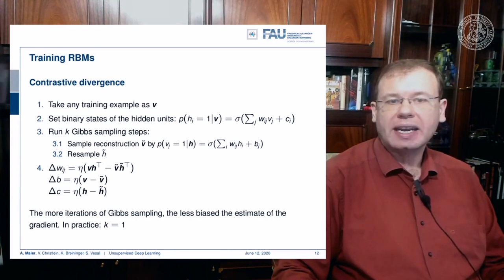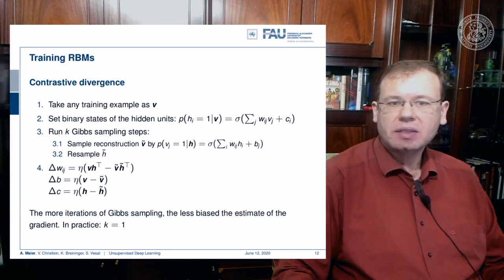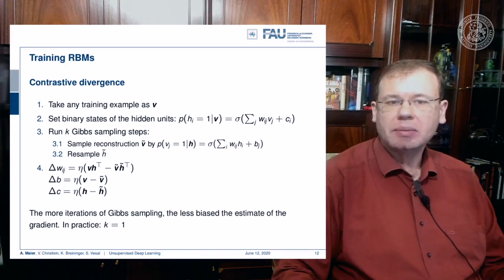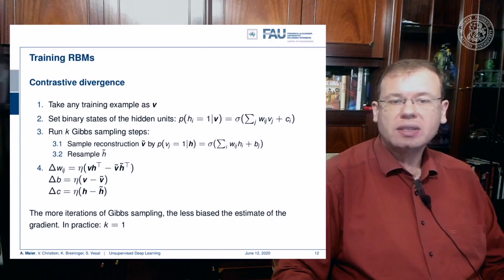This allows you to resample Ĥ. You run this for a couple of steps and then compute the gradient updates. The gradient update for matrix W is η times (V·H^T − V̂·Ĥ^T). The update for bias B is η times (V − V̂) and the update for bias C is η times (H − Ĥ). This allows you to update the weights and biases. The more iterations of Gibbs sampling you run, the less biased the estimate of the gradients will be. In practice, k is simply chosen as one.